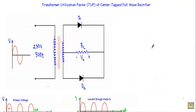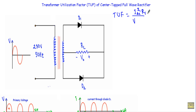In this video I will show you how to calculate the transformer utilization factor of a center-tapped full wave rectifier circuit. We calculate the transformer utilization factor (TUF) by taking the ratio of DC power output delivered to the load to the AC power supplied by the secondary winding of the transformer.